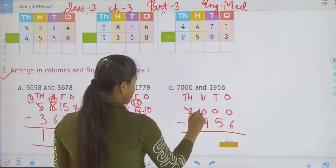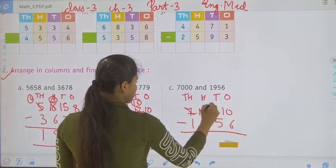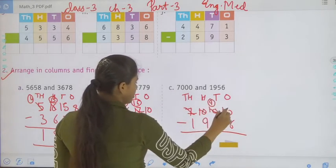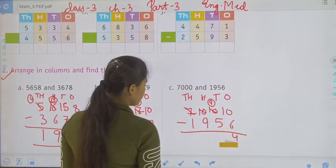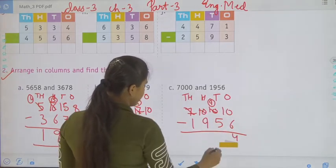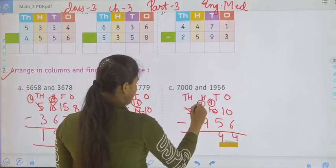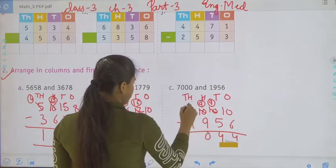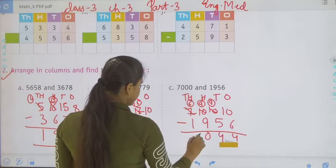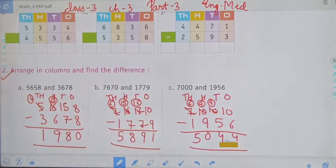Again we have to take a borrow. It will be 9. 10 minus 6, it will be 4. 9 minus 5, it will be 4. Again 9 minus 9, it will be 0. And 6 minus 1, it will be 5. That is 5,044.